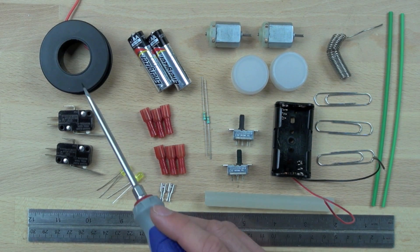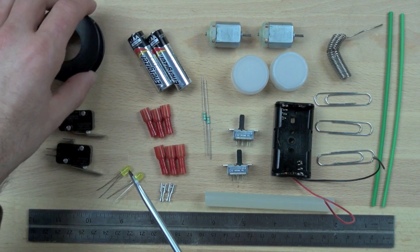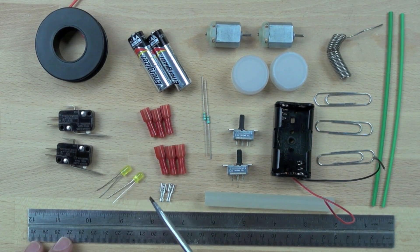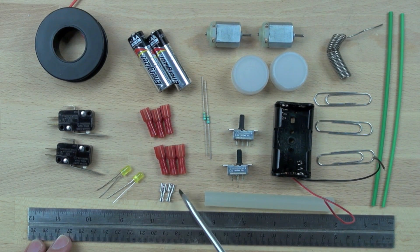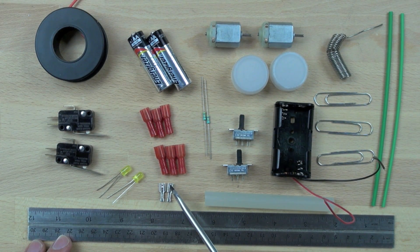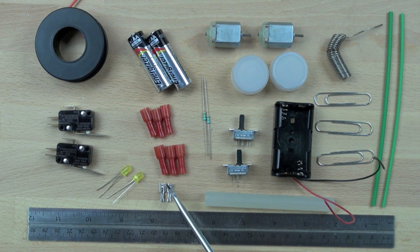Then we need some hookup wire. 22 gauge hookup wire works great. We also need some uncovered spade connectors, the female ones here, and then we also need our LEDs, two LEDs.